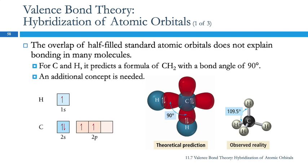So what does this predict? This predicts that carbon and hydrogen interacting with each other would have a formula of CH₂, and that the bond angle would be 90 degrees. But in reality, the simplest compound that forms between carbon and hydrogen is CH₄, and it has a tetrahedral geometry, and the bond angles are 109.5 degrees.